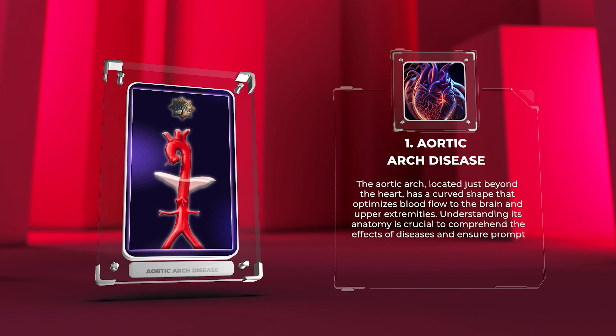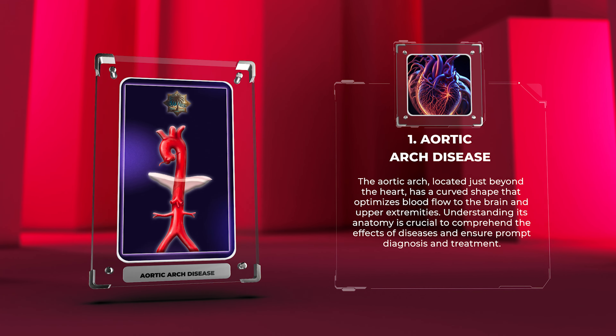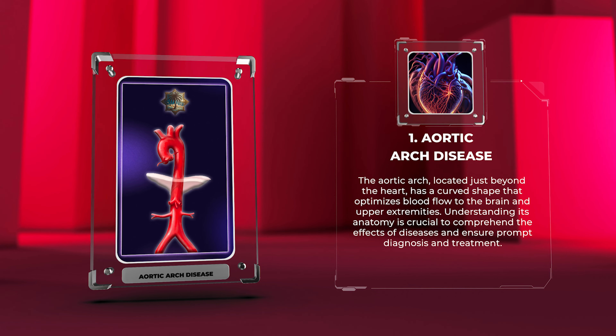The aortic arch, located just beyond the heart, has a curved shape that optimizes blood flow to the brain and upper extremities. Understanding its anatomy is crucial to comprehend the effects of diseases and ensure prompt diagnosis and treatment. Aortic arch aneurysms are abnormal dilations of the aortic arch walls, which can be caused by various factors.